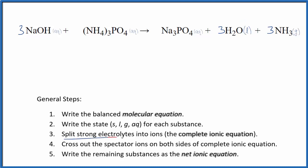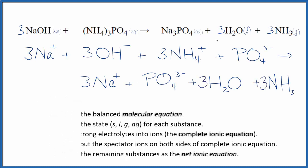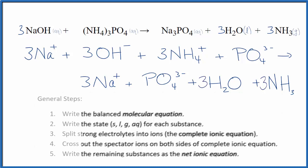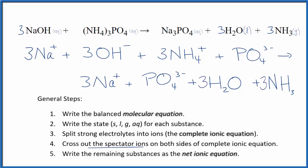Once we have the states, we can split the strong electrolytes into their ions for the complete ionic equation. We split everything up except for water - that's a liquid, we don't split those apart in net ionic equations. We don't split gases apart, and even if this was aqueous, NH3 is a weak base so it's not going to dissociate much. This is the complete ionic equation.